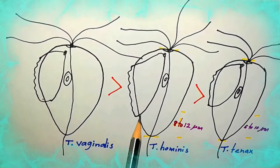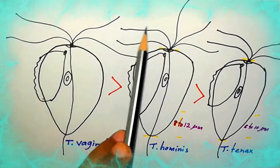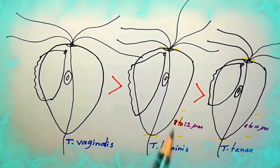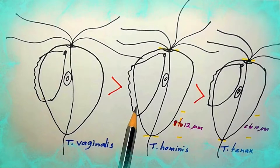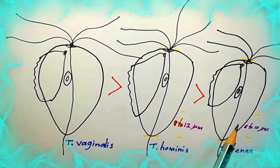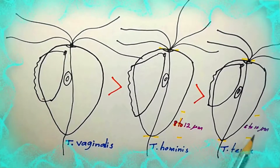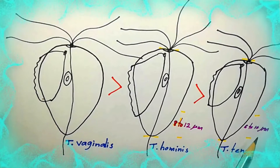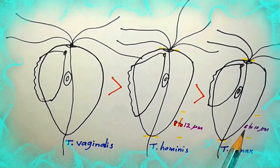One species measures 8 to 12 micrometers and carries 5 anterior flagella and an undulating membrane that extends the full length of the body. It is a very common, harmless commensal of the cecum. Another species measures 5 to 10 micrometers and is a harmless commensal which lives in the mouth. It is transmitted by kissing or oral droplets.